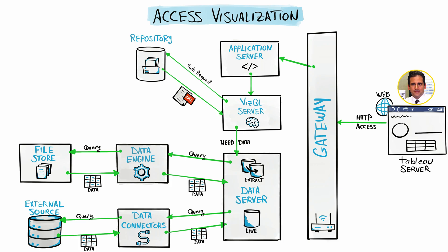Once all the needed data is inside the data server, it combines everything and does another security check: is Michael allowed to see all the data, or should we filter it? The data server filters the data depending on the data security setup you have made, then sends the raw data back to the VizQL server. VizQL now does the magic by turning all those numbers and raw data into images and visuals and puts them inside the workbook.